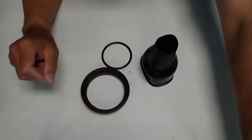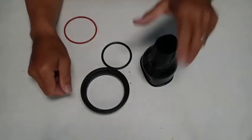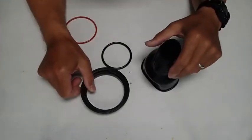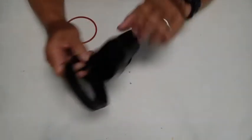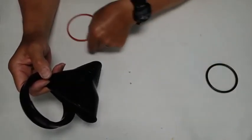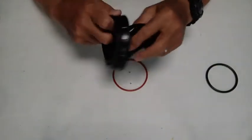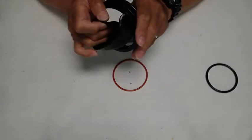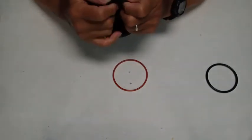The modification that needs to take place in order for this to work properly is to replace this O-ring with another O-ring, a 3-inch, 1/8-inch diameter O-ring.